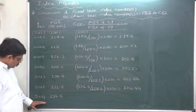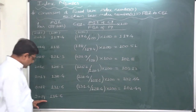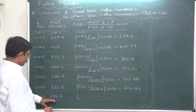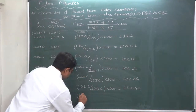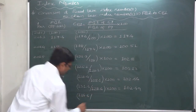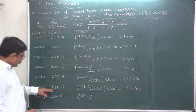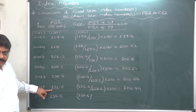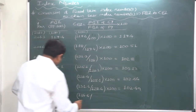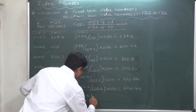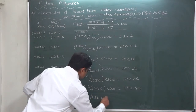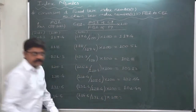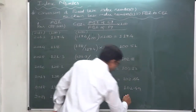For 2019: the fixed-base index number is 134.6, divided by the fixed-base index number of 2018, which is 131.6. Multiply by 100. The answer is 102.28.